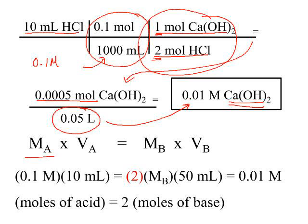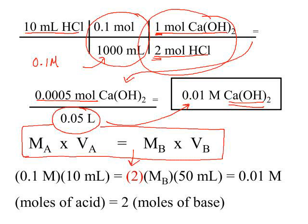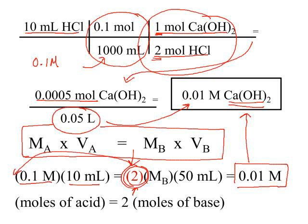If you use the molarity times volume equation, you can use it here too — you just have to make sure you take into account the less than 1-to-1 mole ratio. You've got your molarity and volume of acid, and as we said, it's going to take twice as many moles of base to neutralize it, so you need to account for that. You will get the same exact answer as in the problem above. It's just that students frequently put this factor of 2 in the wrong place, so use whichever method you prefer.